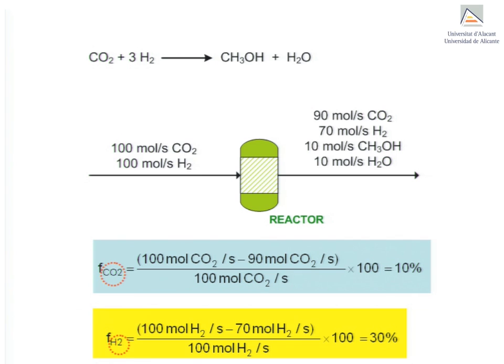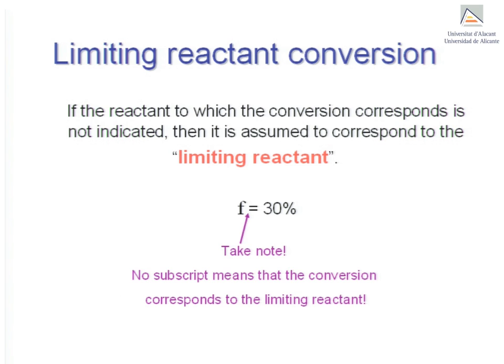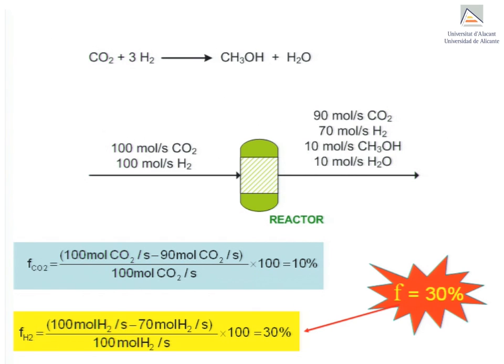However, there are a few exceptions. Sometimes chemical engineering problems state the conversion but not the component to which it refers. This happens when the conversion corresponds to the limiting reactant. In our example, it would be correct to say that the system conversion is 30%, since hydrogen is the limiting reactant in this case.